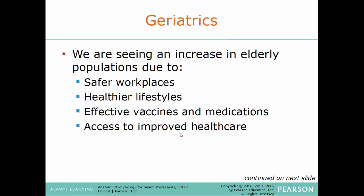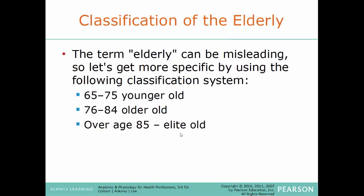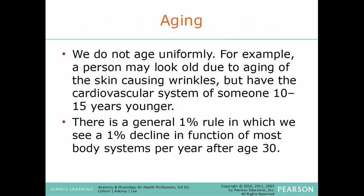Geriatrics: we are seeing an increase in elderly populations due to safer workplaces, healthier lifestyles, the effectiveness of vaccines and medications, and access to improved healthcare. Geriatric patients differ in many ways from other populations. The term 'elderly' can be misleading, so a more detailed classification system is used: ages 65–75 are 'younger old,' 76–84 are 'older old,' and over 85 are 'elite old.' We do not age uniformly — a person may look old due to wrinkled skin but have the cardiovascular system of someone 15 years younger. There is a general 1% rule: a 1% decline in function in most body systems after age 30.